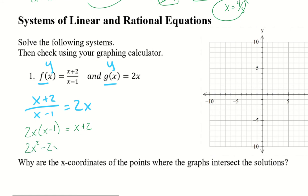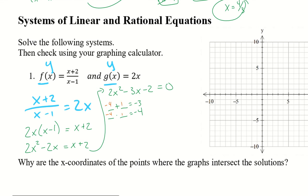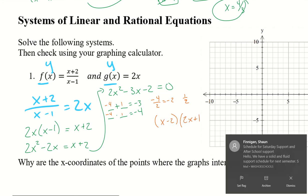Cross-multiplying gives 2x times x minus 1 equals x plus 2, so 2x squared minus 2x equals x plus 2. Moving everything to one side: 2x squared minus 3x minus 2 equals 0. I need two numbers that add to negative 3 and multiply to negative 4, which is negative 4 and positive 1. Dividing by the a value of 2 gives negative 2 and positive one-half.